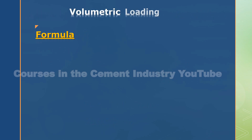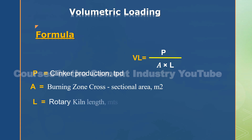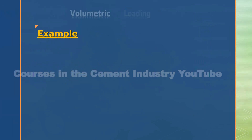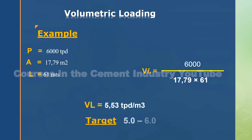Formula for volume loading: VL equals — where P equals clinker production, A equals burning zone cross-sectional area, L equals rotary kiln length. Example: where P equals 6000, A equals 17.79, L equals 61. VL equals volume loading equals 5.53. Target equals 5 to 6.